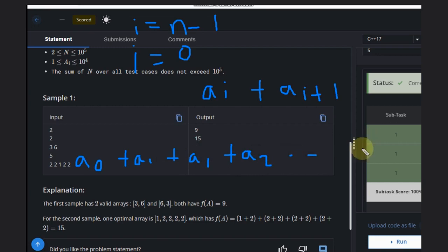If you notice, like A[1] is coming twice, A[2] is coming twice, but the first element and this last element are coming only once. These two elements, first and last, are coming only once. With this we can notice that we should have the minimum elements at both extremes so that we can reduce the contribution of those minimum elements.